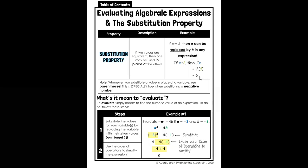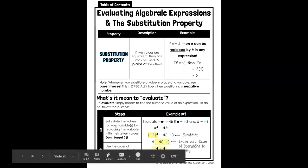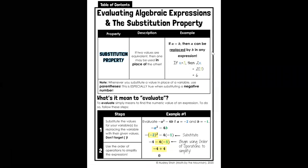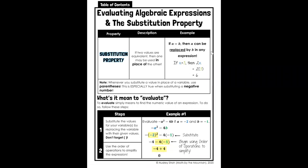And that's how we evaluate an expression using substitution. To evaluate simply means to find the numeric value of an expression. To do it, we follow these steps: Step 1, substitute the values for your variables by replacing the variables with your values—don't forget to use parentheses. Step 2 is use the order of operations to simplify the expression.